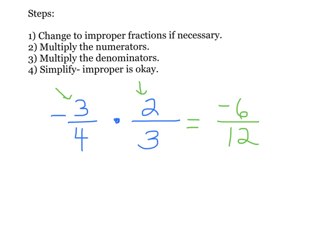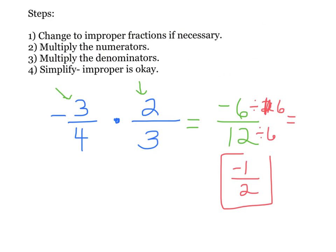Your last step is to simplify. You need to see if something goes into both 6 and 12. I know 6 goes into both, so I'm going to divide both the top and the bottom by 6. If I divide the top by 6, I get negative 1. And 12 divided by 6 on the bottom is 2. So my final simplified answer is negative 1 half.